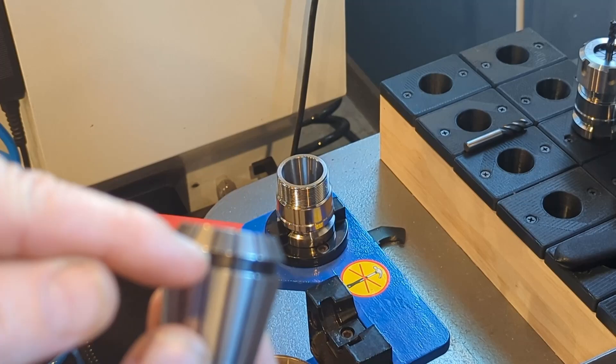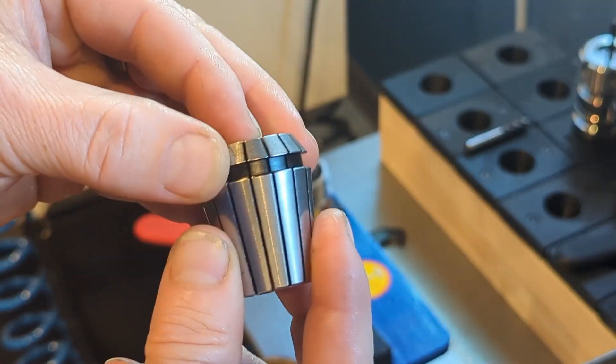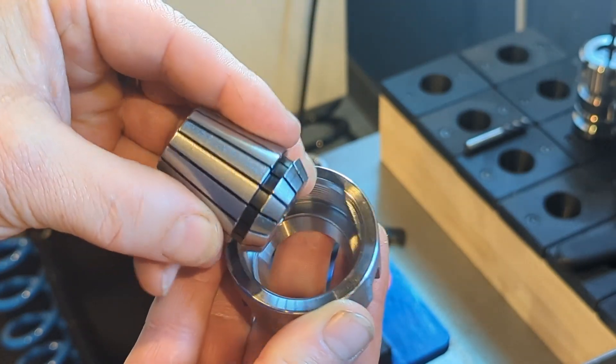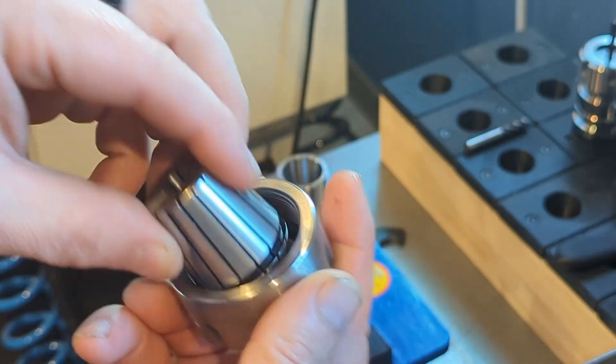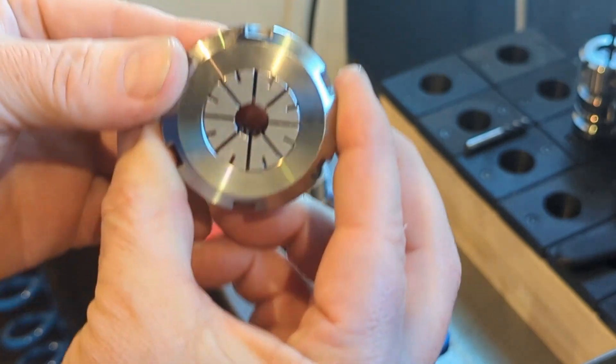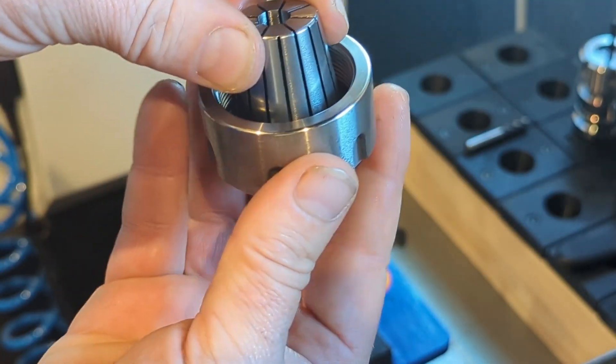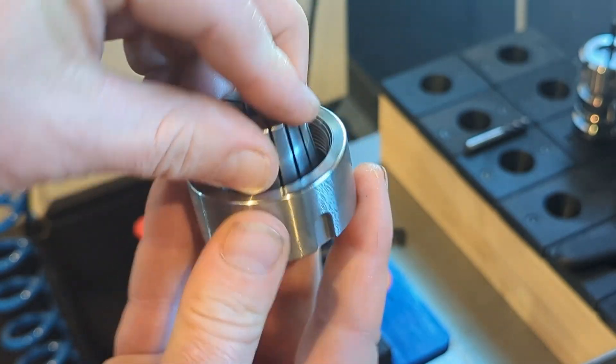So this feature here on this collet - there's this ground recess in here that'll actually catch inside this collet and then it's flush. It almost wants to hold, but it'll come out.